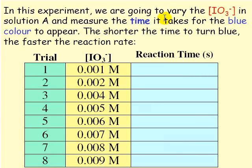So what we're going to do in this experiment is we're going to vary the concentration of IO3- in one of the test tubes. You can see the values here. And we're going to measure the time it takes for the blue color to appear. Again, realize that the shorter the time it takes to turn blue, the faster the reaction rate.